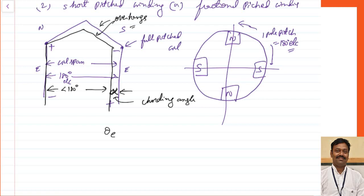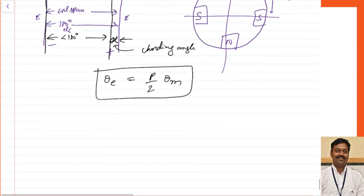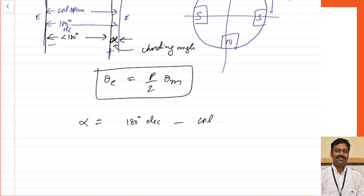We know that theta_electrical equals (P/2)·theta_mechanical. The value of alpha — the cording angle — is 180 degrees electrical minus the actual coil span. The coil span is decreased from the full pitch by this amount.